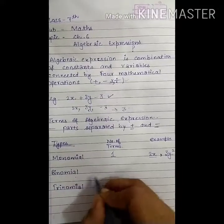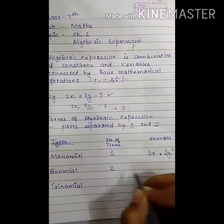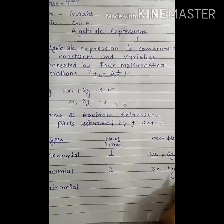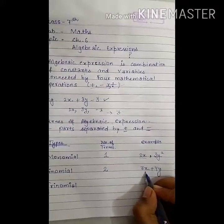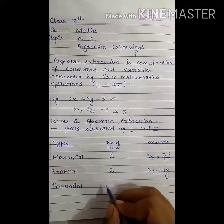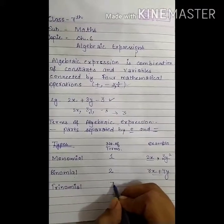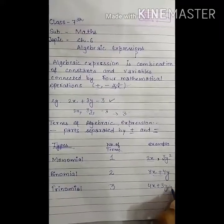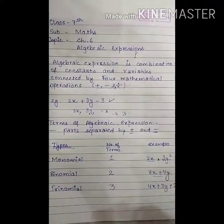Now, binomial having two terms. For example, 3x + 4y. There are two terms. So, this is binomial. Trinomial having three terms. For example, 4x + 3y + 2z.